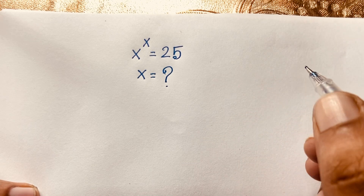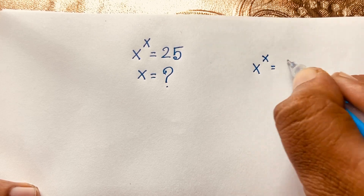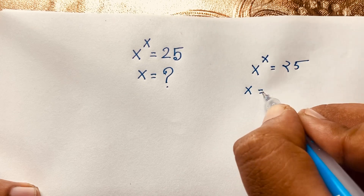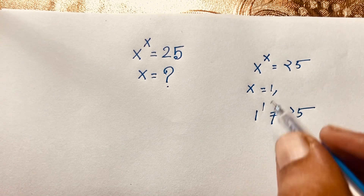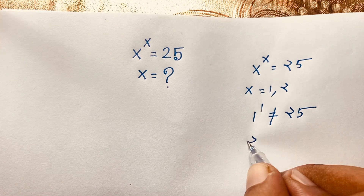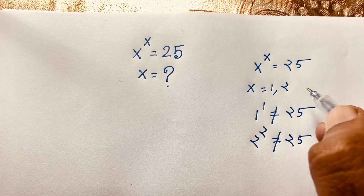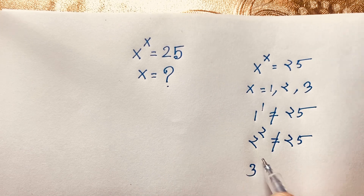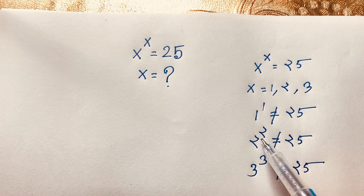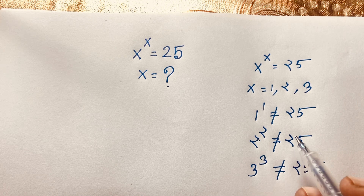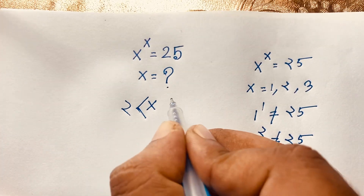First of all, if you think x is equal to 2 or x is equal to 1, our question is x to the power x is equal to 25. If x is equal to 1, then 1 to the power 1 is not equal to 25. If x is equal to 2, then 2 to the power 2 is not equal to 25, because 2 to the power 2 is 4. If x is equal to 3, then 3 to the power 3 is also not equal to 25. But 3 to the power 3 is 27, and 2 to the power 2 is 4. So at this moment, x is greater than 2 and less than 3.